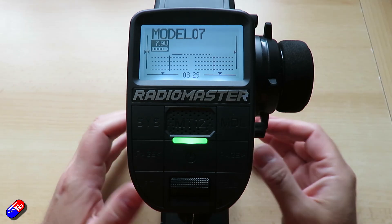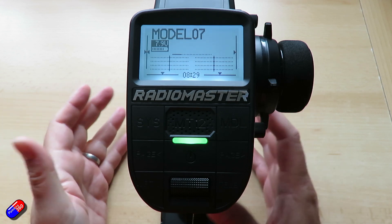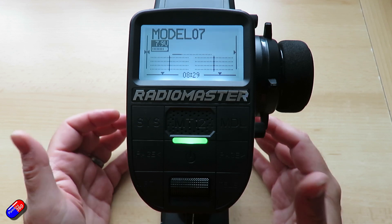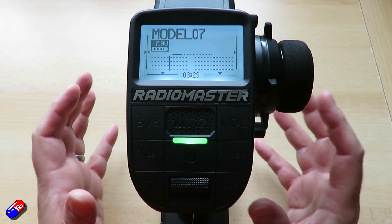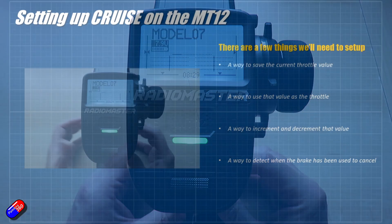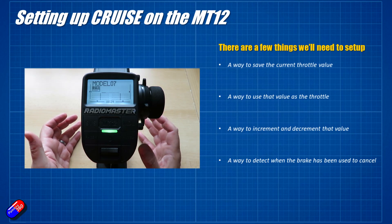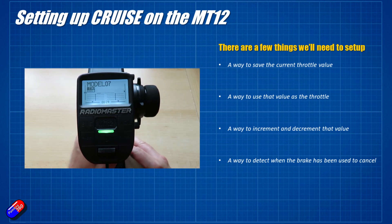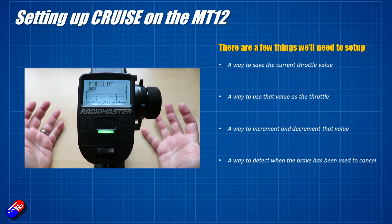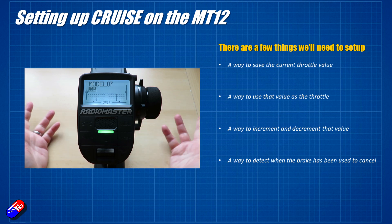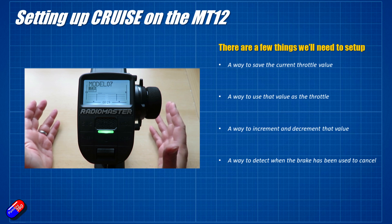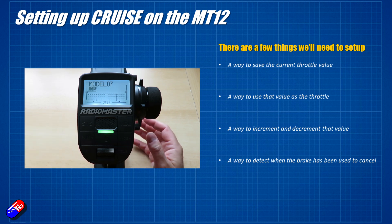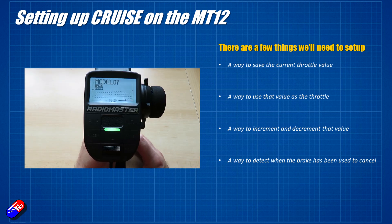However, before I just dive into the menus, I thought it might be useful — with this being a slightly more detailed one — to take a step back and think about what we actually need to make this work. First and foremost, we need a way to save the current throttle value. Whatever value is on that throttle channel, we need a way to store it so we can use it when in cruise mode. We also need a way to use that saved value as the throttle rather than the actual input from the trigger.